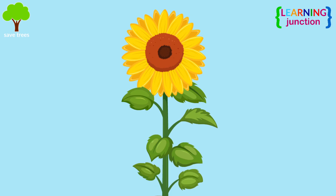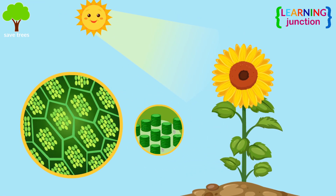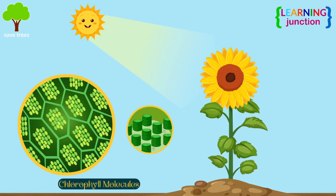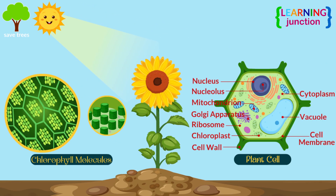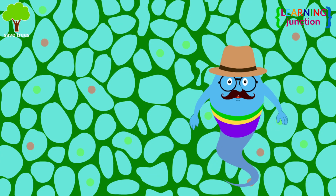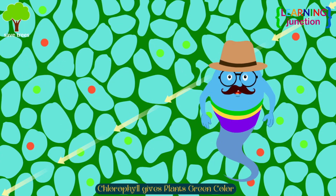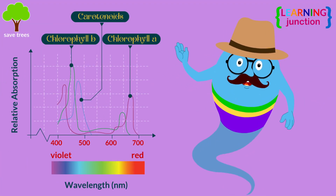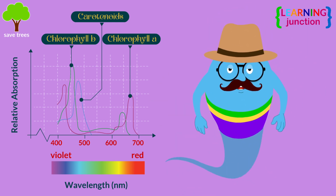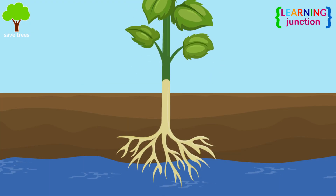Plants spread out their leaves to capture energy-giving sunlight. This energy is absorbed by pigments like chlorophyll molecules embedded in the plant cells. Chlorophyll is a natural pigment that gives plants their green color and is needed to absorb light energy for the food-making process.